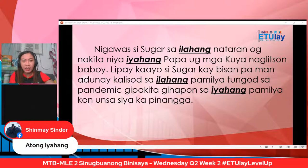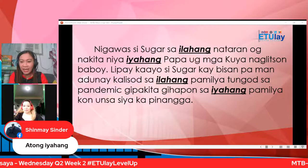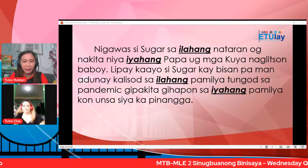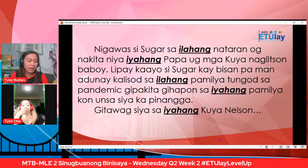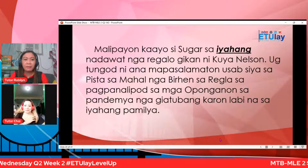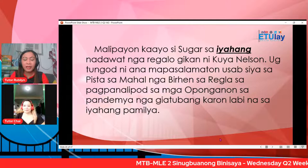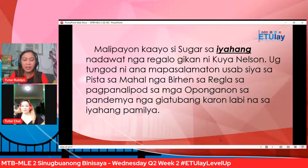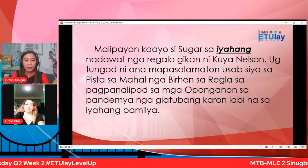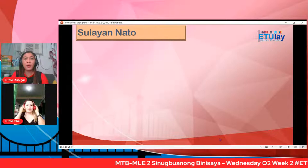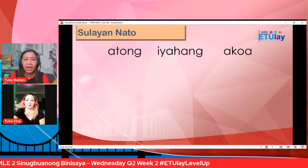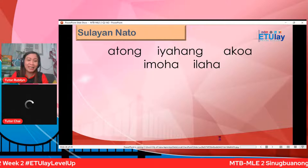Then: malipayon kaayos si Sugar sa iyahang nadawat niya regalo, gikan ni Kuya Nelson. Pugtungod ni Ana, mapasalamaton siya sa pista sa mahal nga Birhen. Naadihay pulong na iyahang — mauna ang gilinyahan. Kini nga mga pulong — iyahang, akua, imuha, ilaha — gitawag ni nga panghupot nga pulingan, o possessive pronoun.